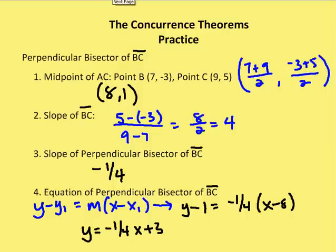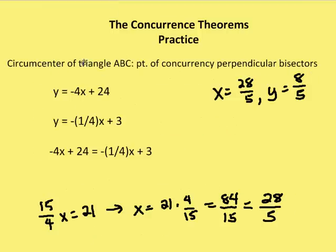Now we have two perpendicular bisectors. We can set those two equations equal to each other and solve for both x and y. The circumcenter of ABC is the point of concurrency of the perpendicular bisectors. We have: y = -4x + 24, and y = -1/4x + 3. Setting them equal: -4x + 24 = -1/4x + 3.